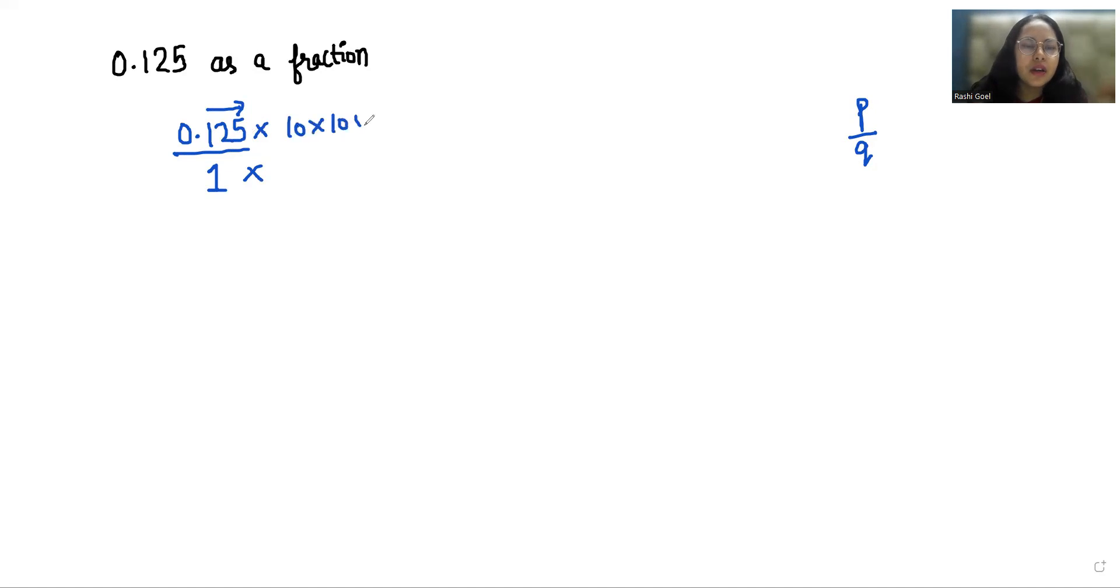So we have multiplied 10 times 10 times 10 in numerator as well as in denominator. So the numerator becomes 125 and the denominator becomes 1000.